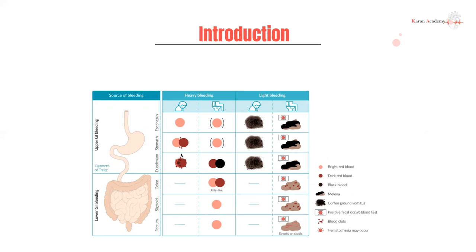Here's a graphic representation of what that might look like. Depending on where the bleeding is, heavy bleeding tends to be more red in color because it hasn't had time to undergo digestion, while light bleeding tends to be coffee ground in color. In terms of what you see in stool, it's mostly going to be frank red blood with a heavy bleed, versus light bleeding that is typically melena. All of these would have a positive fecal occult blood test, because there is some trace of blood.